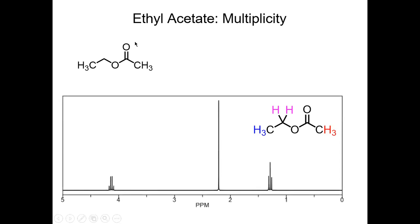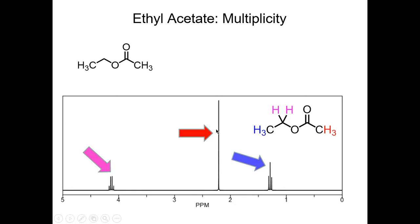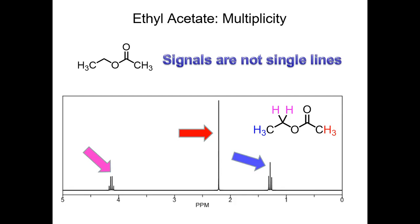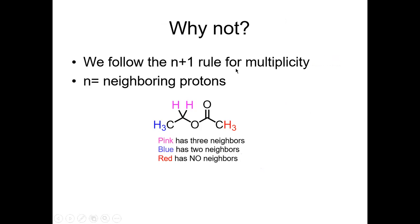Now let's talk about multiplicity — the splitting pattern. Looking at the ethyl acetate NMR: one signal is a single line (singlet), one is split into three lines (triplet), and one is split into four lines (quartet). We determine this using the N+1 rule: whatever the number of neighboring protons (N), the signal will be split into N+1 lines.